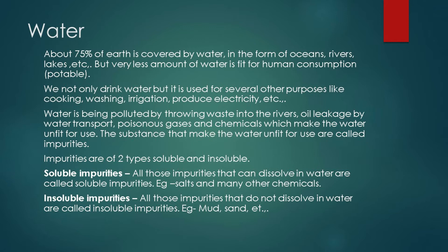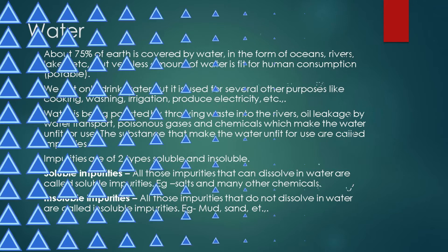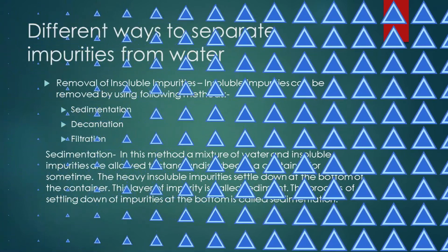The second type of impurity is insoluble impurities. All those impurities that do not dissolve in water are called insoluble impurities. Examples are mud, sand, etc.